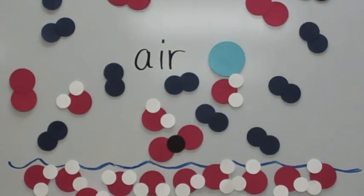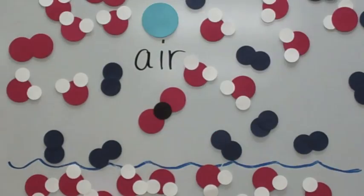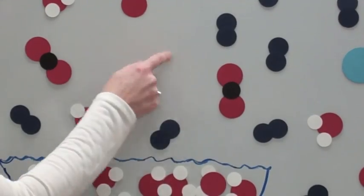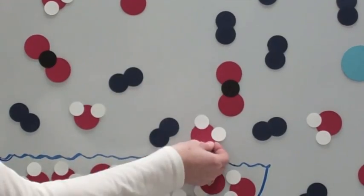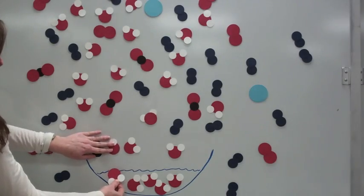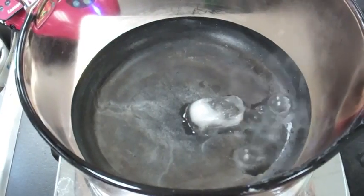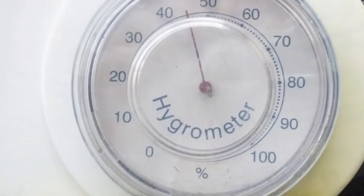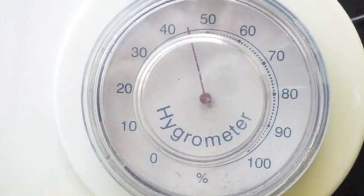So much energy that they will rip away from the bonds holding them together as water and float off as a gas — but only if the second requirement is also met. There must be room in the air for the water to fit. If the air is already filled with water, as in it's very humid, no more water can evaporate. Temperature isn't the biggest factor with water evaporating — it's actually humidity.